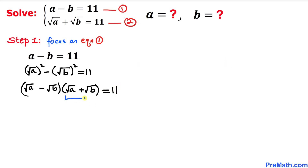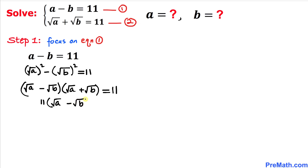Now, square root of a plus square root of b equals 11 — that is equation two — so we replace that factor with 11. This gives us 11 times square root of a minus square root of b equals 11. Dividing both sides by 11, we get square root of a minus square root of b equals 1.